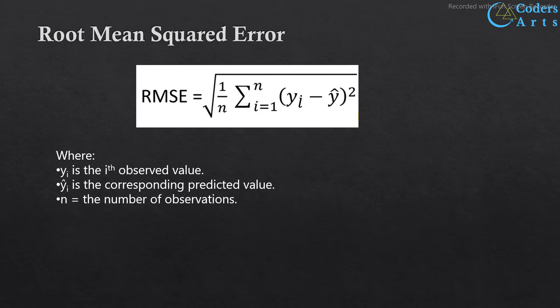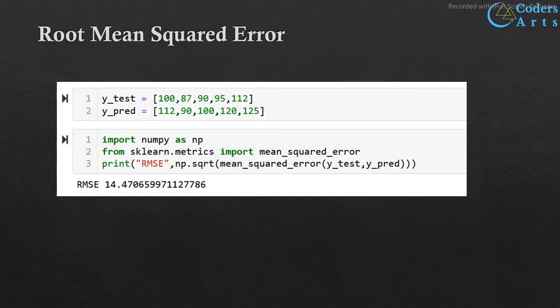Root mean squared error is the square root of mean squared error. After finding the mean squared error, we simply find the square root of that mean value — and this value is closer to the mean absolute error. Root mean squared error is the standard deviation of the residual errors. Residual errors measure how far data points are from the regression line. RMSE measures how spread out these residual errors are — in other words, it tells how concentrated the data is around the line of best fit.